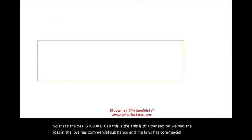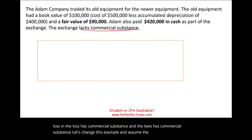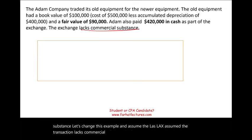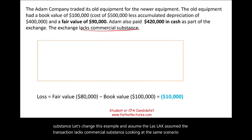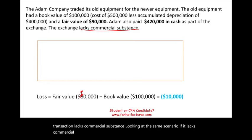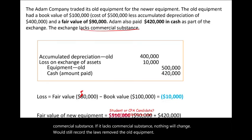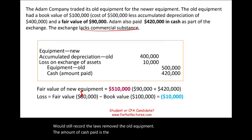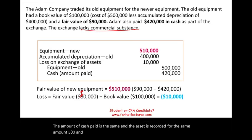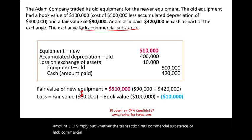Now let's change this example and assume the transaction lacks commercial substance. Looking at the same scenario — if it lacks commercial substance, nothing will change. We would still record the loss, remove the old equipment, record the same cash paid, and the asset is recorded at the same $510,000. Simply put, whether the transaction has commercial substance or lacks commercial substance, it's the same transaction when there is a loss.